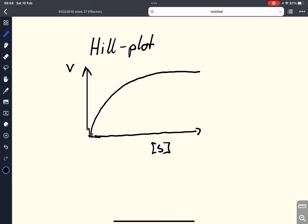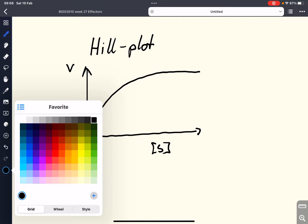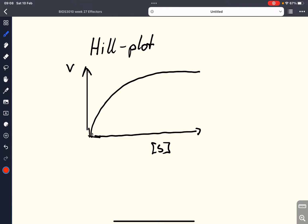And this is a hyperbolic curve. However, if we have some kind of cooperativity in the enzyme, then we will find a sigmoidal curve like this, an S-shaped curve. And this is when we have positive cooperativity.